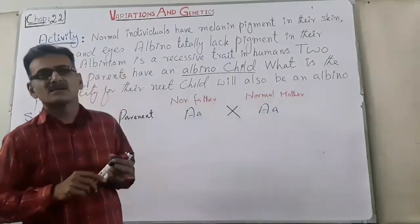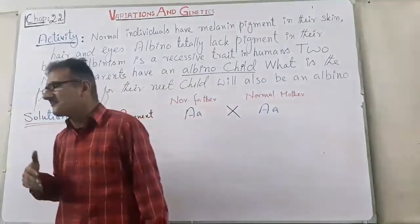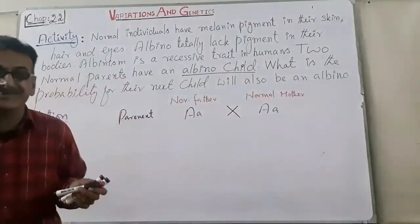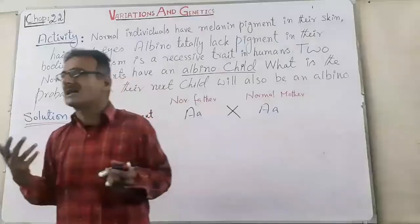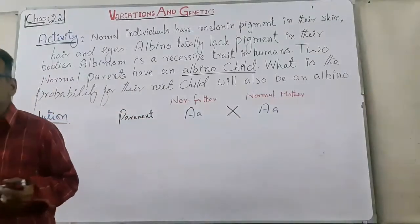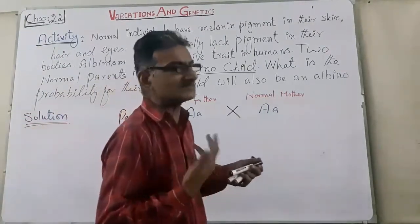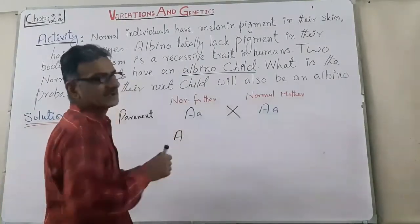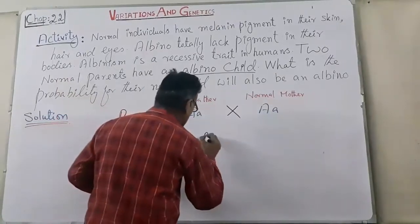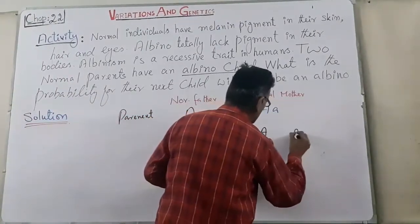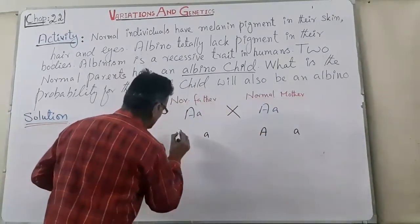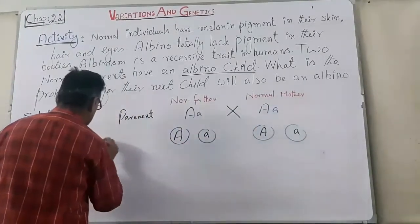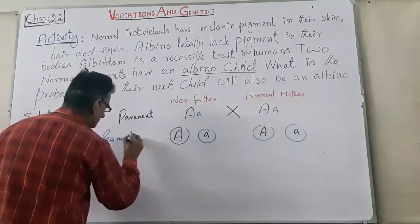When they produce male and female gametes, alleles are segregated at meiosis, because gametes in human beings are produced when meiosis takes place in the germ cells. The father produces two types of gametes: capital A and small a. Similarly, capital A and small a gametes are present from the mother. These are the gametes from both parents.